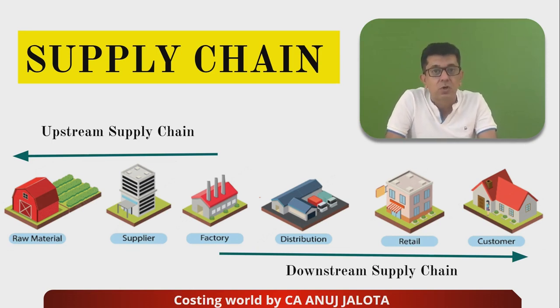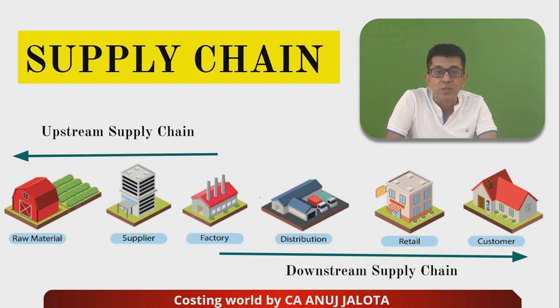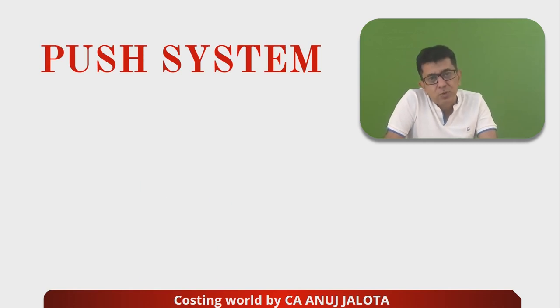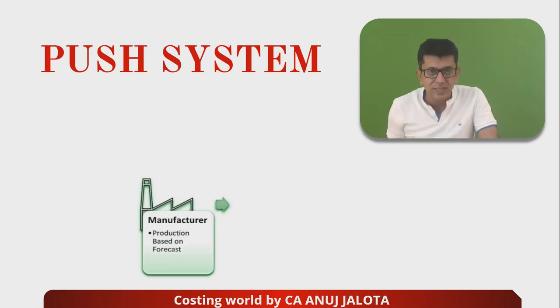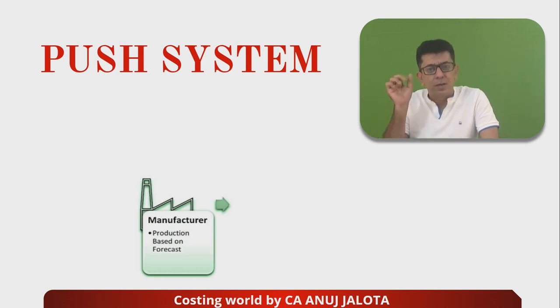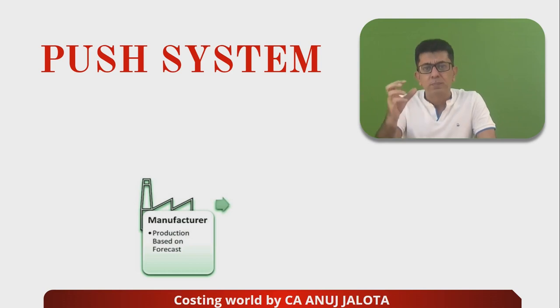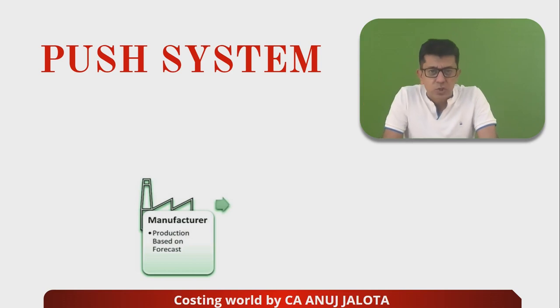Customers always come towards the bottom part of the supply chain, and that is why from factory to the customer this part is called the downstream supply chain. Consumers come towards the end of the supply chain — they are the end receivers of the goods. Now supply chains worldwide function in two ways: a push supply chain or a pull supply chain. Push supply chain basically starts with a manufacturer who has forecasted the demand.